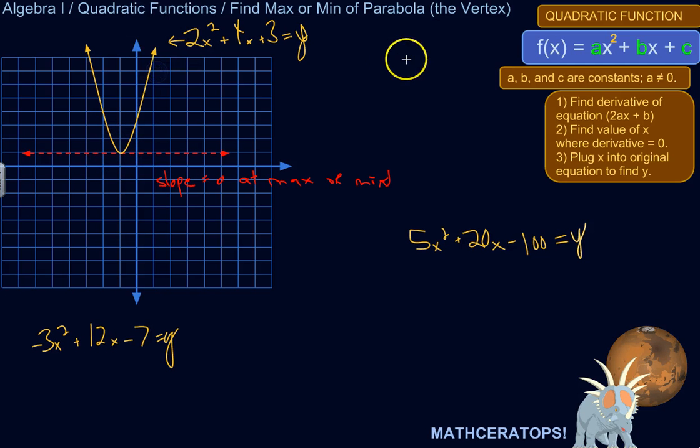If I had a parabola that went like this, that's a really sloppy one. But the vertex would be up here, and it would be a maximum, because it's the highest point.